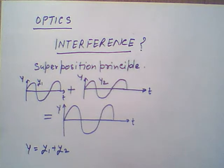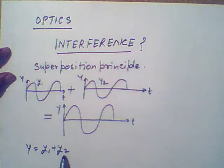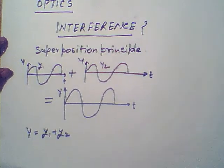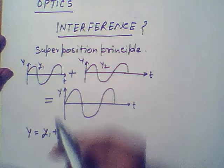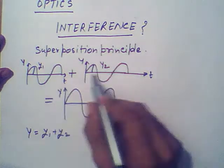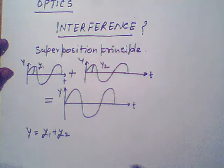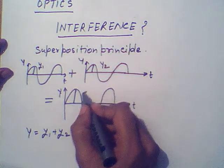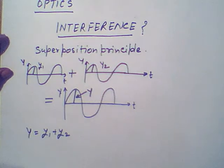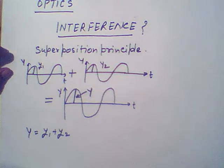The superposition principle says that when two or more waves superimpose, they produce a resultant wave, and the amplitude of the resultant wave will be the algebraic sum of the individual amplitudes y1 and y2. Y is the resultant amplitude where y1 and y2 are the displacements of wave 1 and wave 2, and Y is the maximum amplitude of the resultant wave.